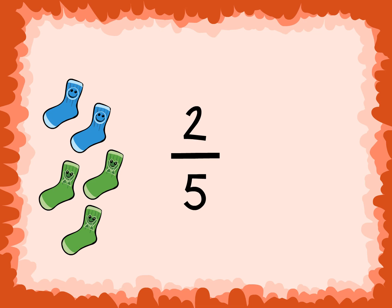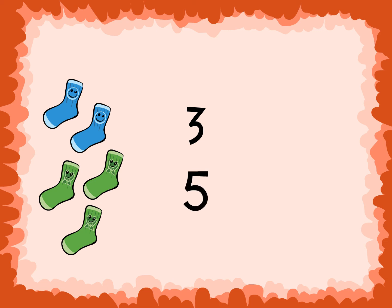We can also find the fraction for the number of green socks. There are 3 green socks, and there are 5 socks in all. That means that there are 3 out of 5, or 3 fifths, green socks in the group.